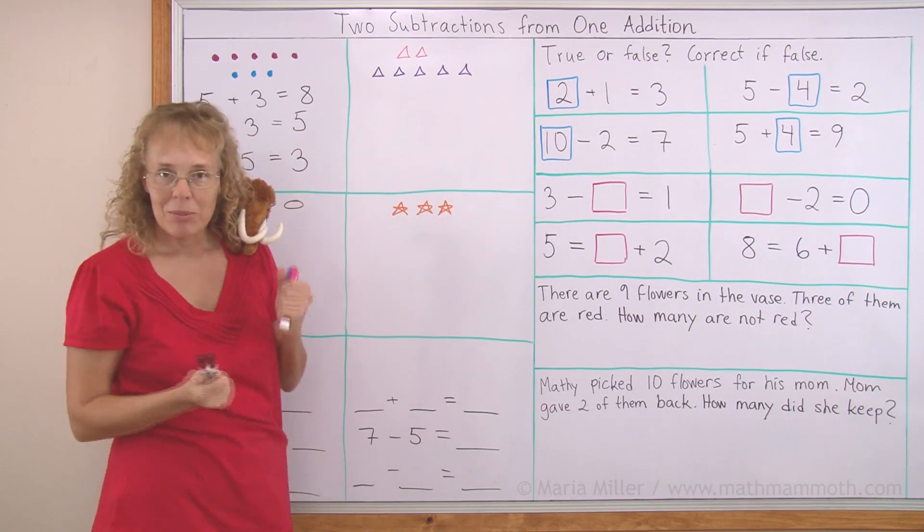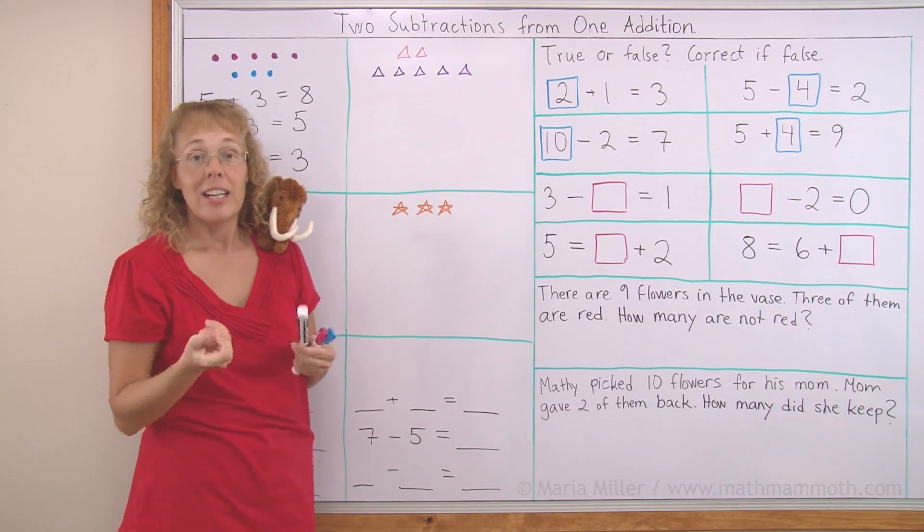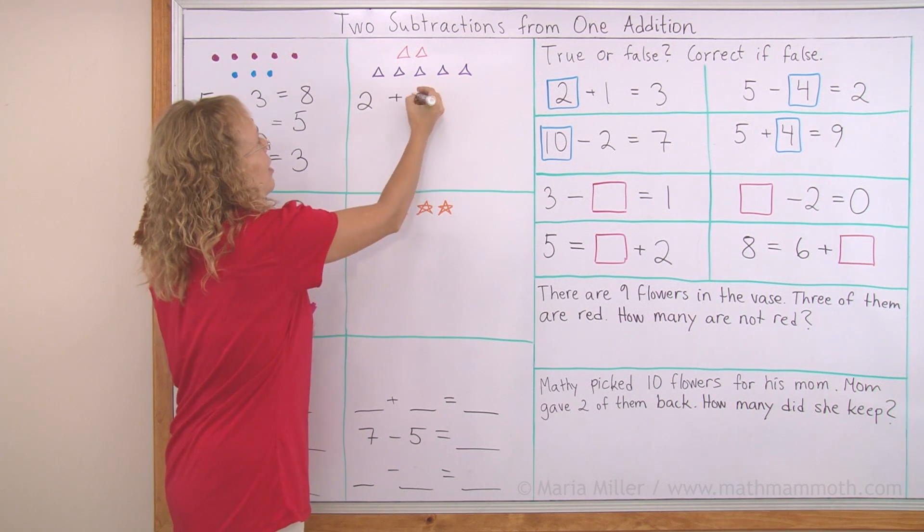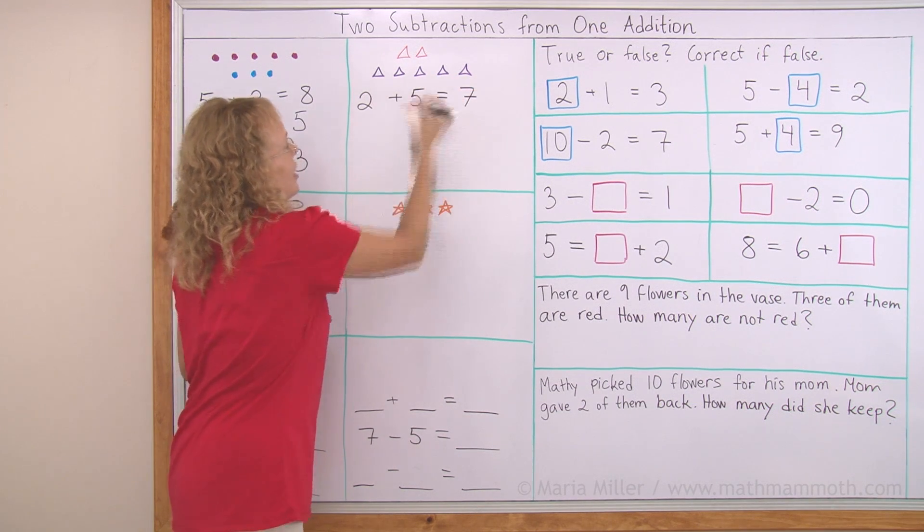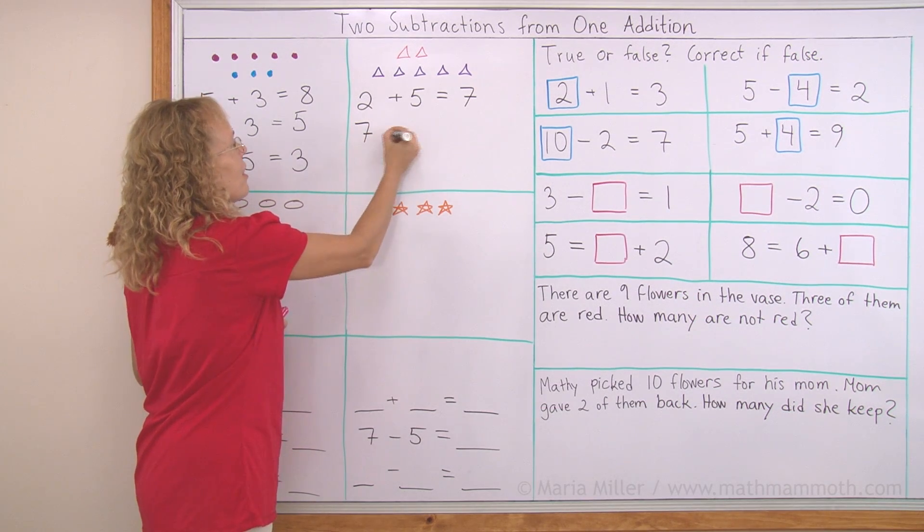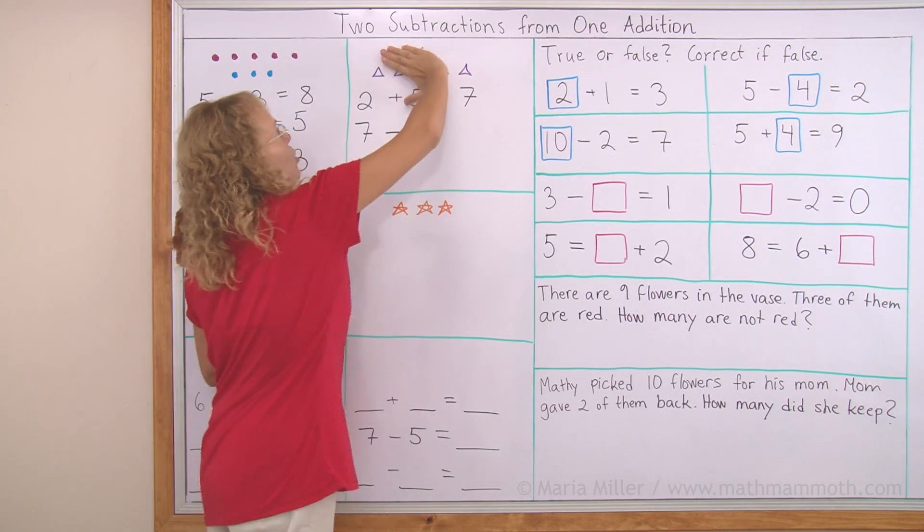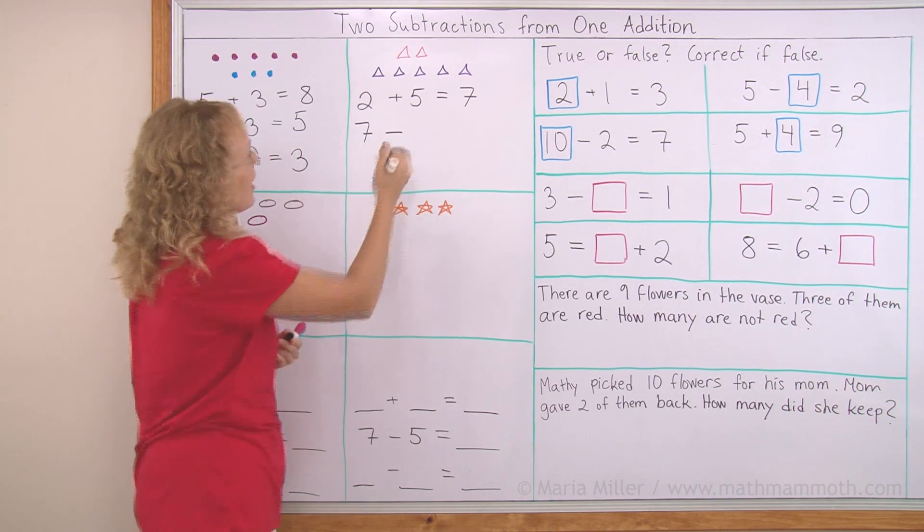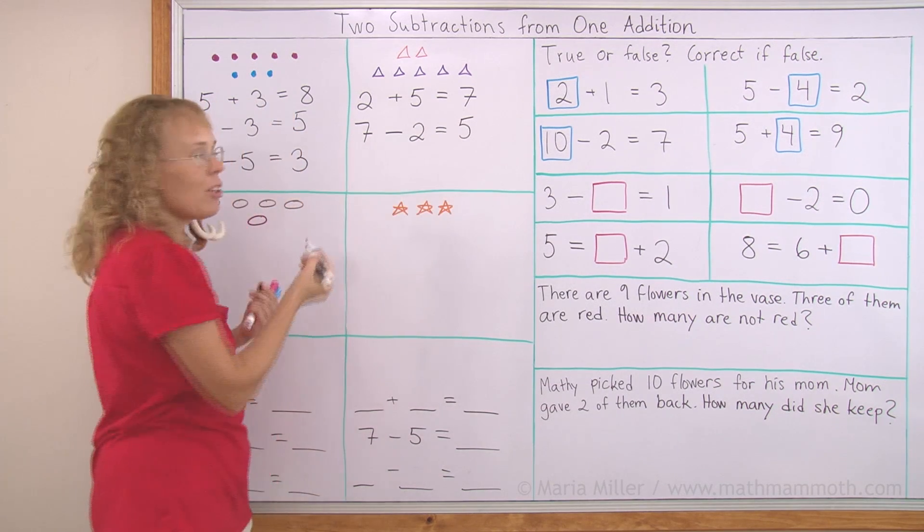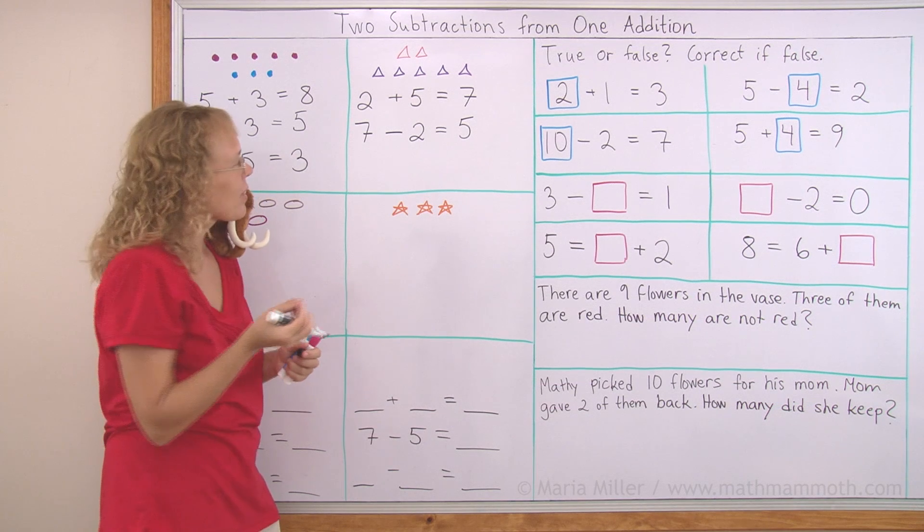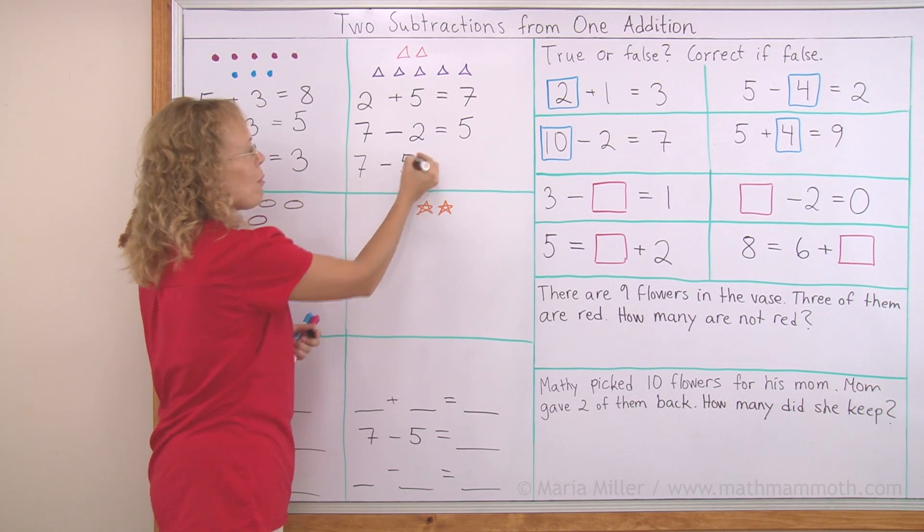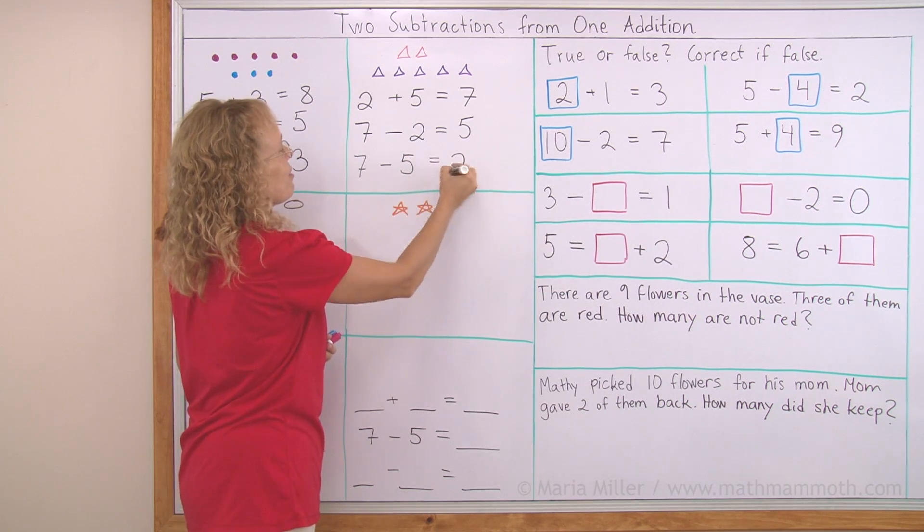Let's try it here too. We have some triangles. First I will write an addition. Two triangles, the red ones, plus the five purple triangles makes a total of seven. And then the subtractions. In the beginning I have seven and then some of them go away. Let's say these two from the top go away and then I would have five left. Or the other subtraction, can you tell me what it is? Starts with seven, and then if those five purple ones go away, then we would have two left.